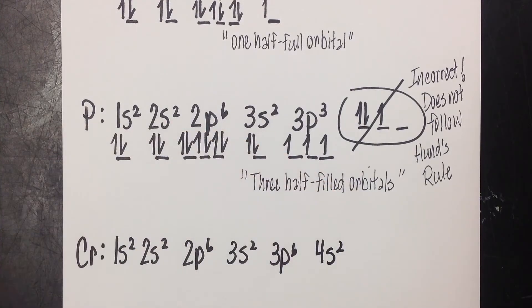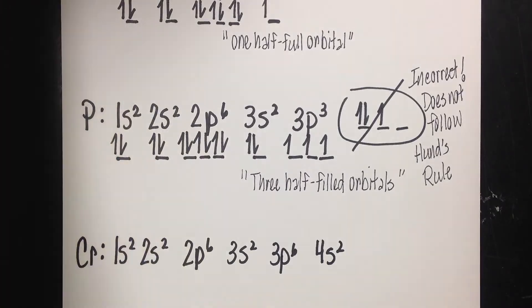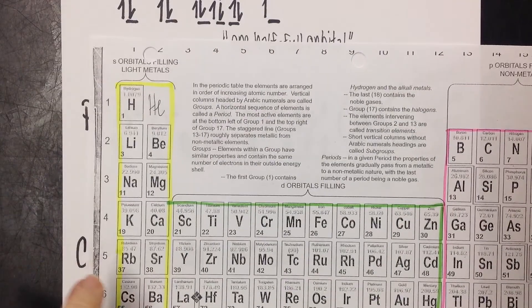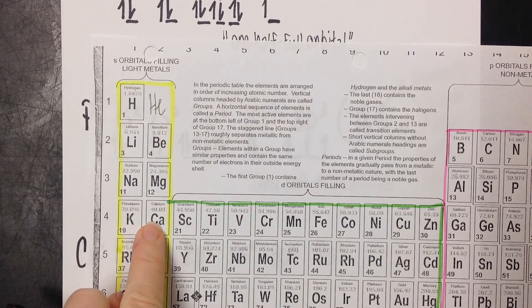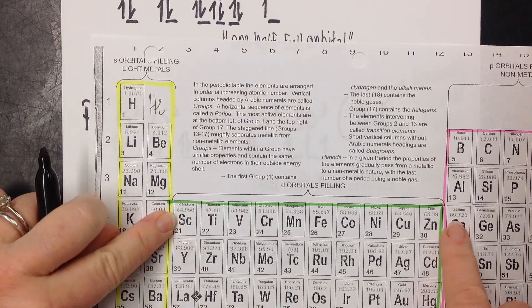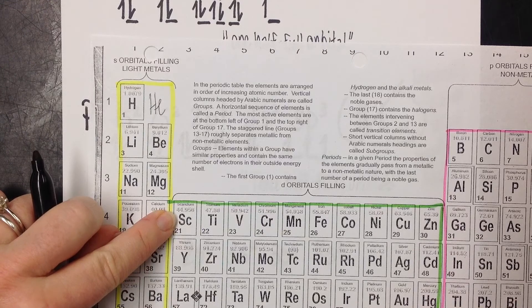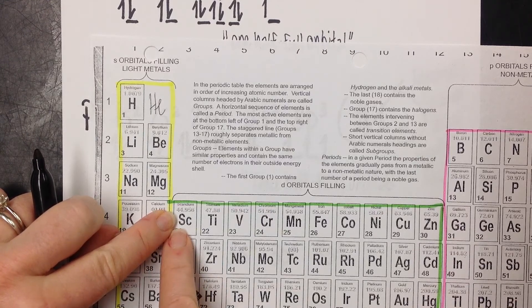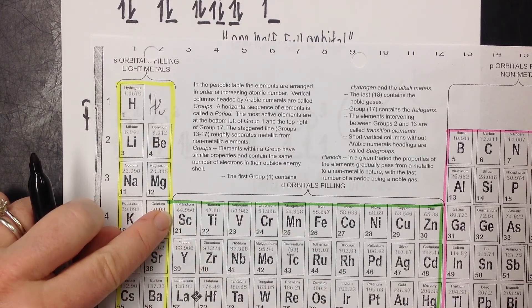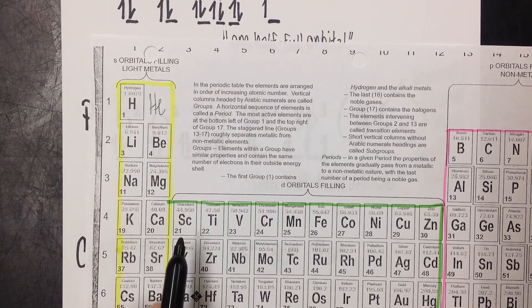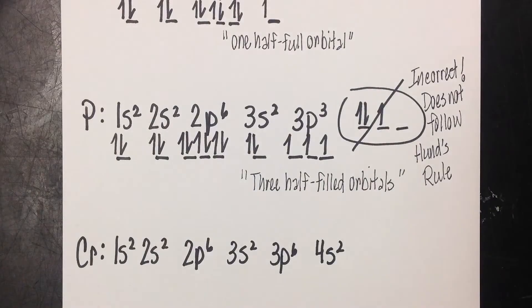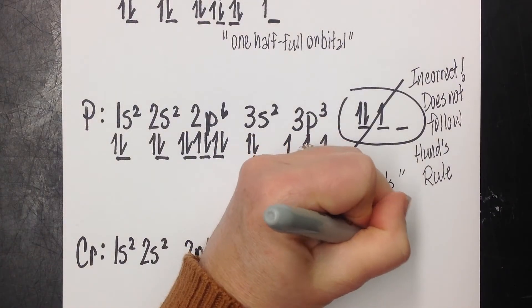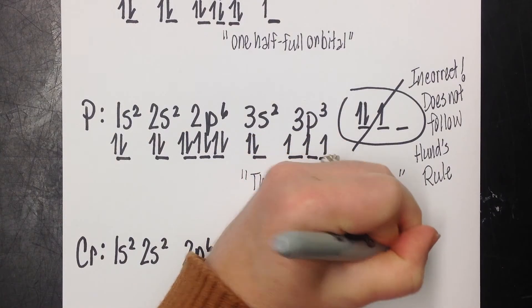I'm going to keep going. Now I'm getting close because I just got to 4s2, which is right here, 4s2. And now because I've hit the D-block and the D-block's a level behind, now I'm on row 3 again. So I'm 3d, and now we're going to count over 1, 2, 3, 4 until we hit chromium. So we're going to end with 3d4.